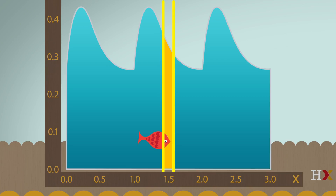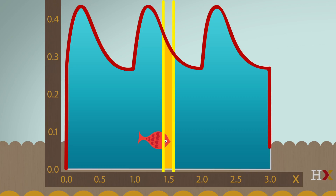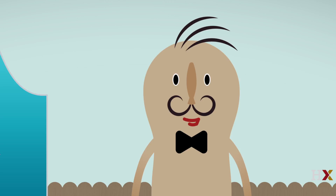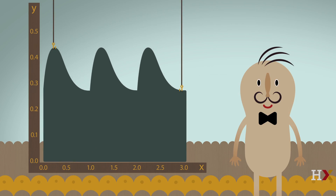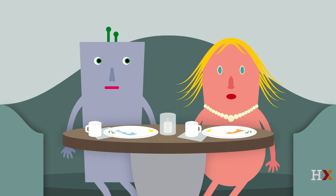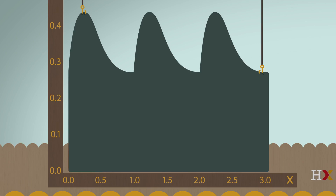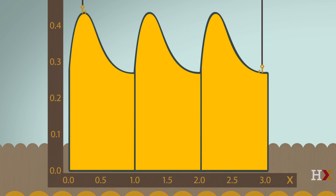Note that the PDF of Randi's horizontal position is the curve formed by the tank, since the probability of her being in a region is the area of that region. Now, what's the probability that Randi is between x equals 1 and x equals 2? Same idea — we just need the area under the curve from x equals 1 to x equals 2. But wait, there's a sweet symmetry here: Randi is equally likely to be in the intervals 0 to 1, 1 to 2, and 2 to 3. So by symmetry, the probability is 1/3 of being between 1 and 2.